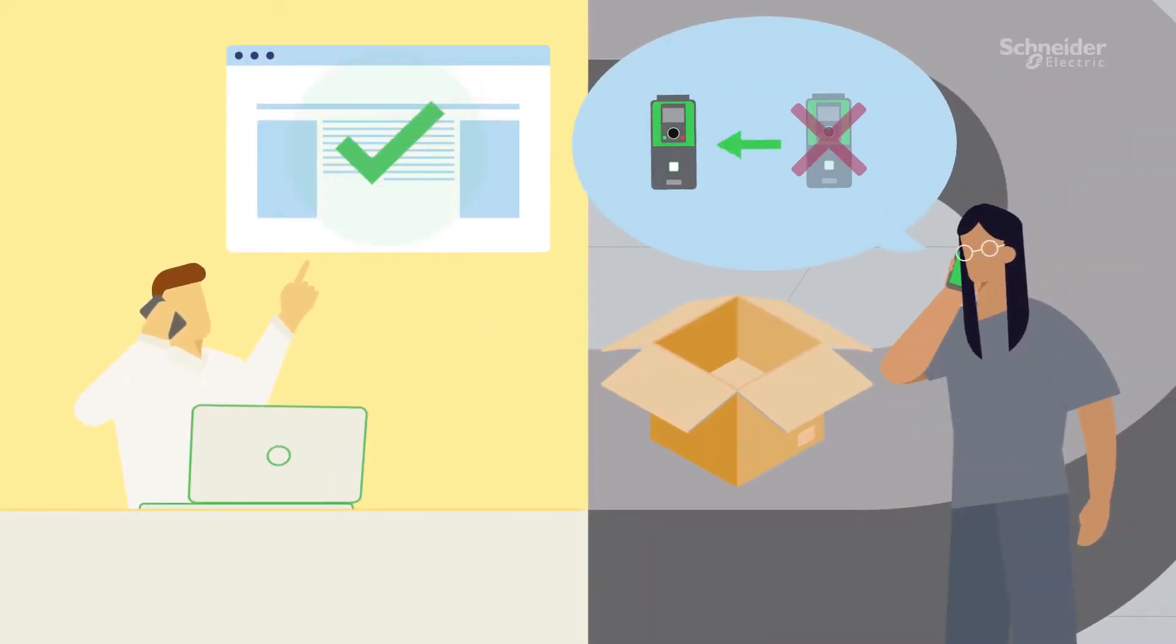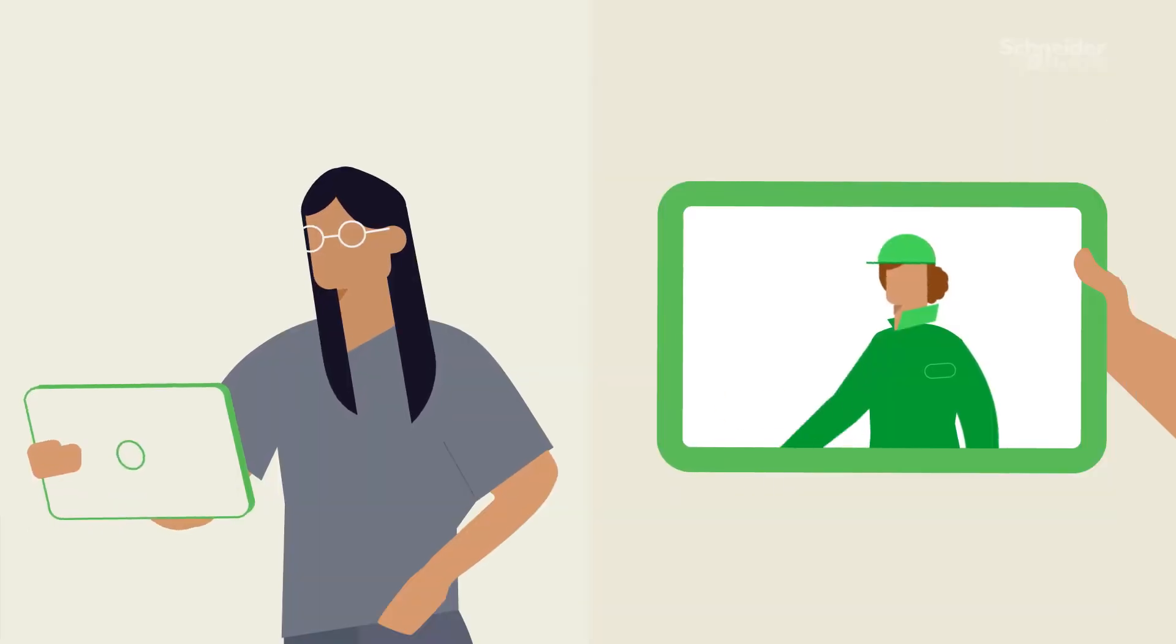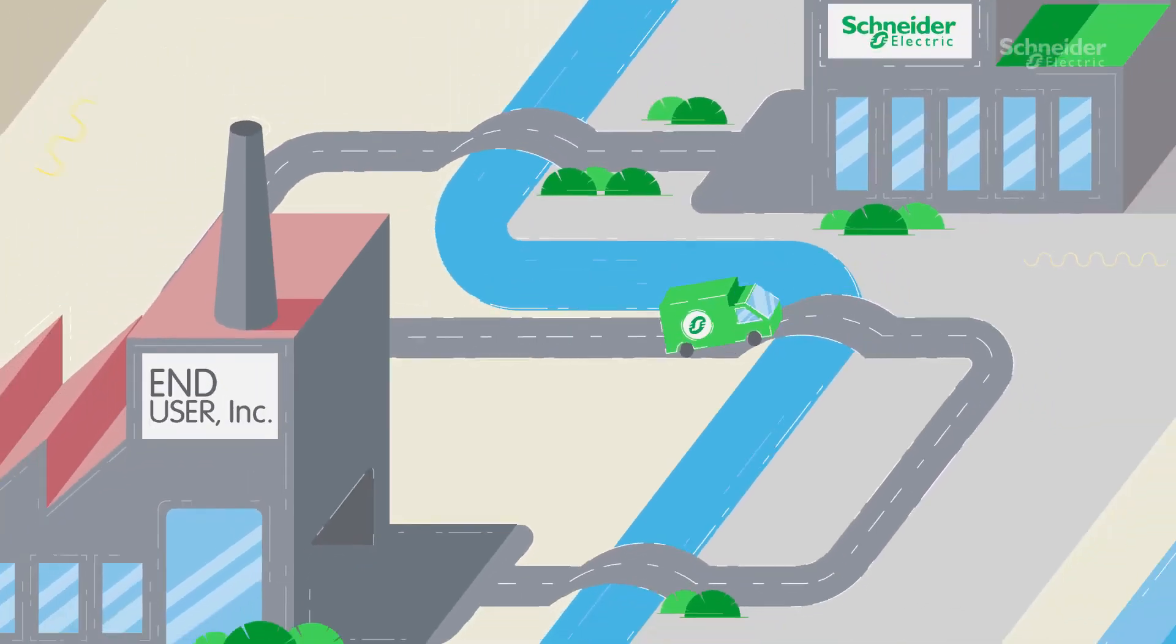You can extend the warranty for key components from one to three years beyond the original date. Get replacement products when you need them with our ship first, return later policy.